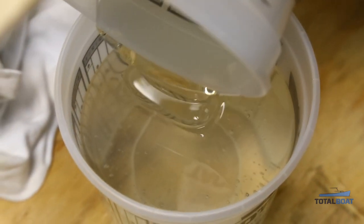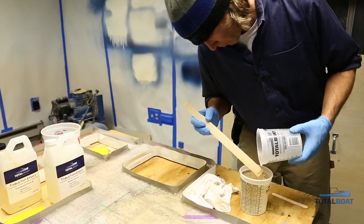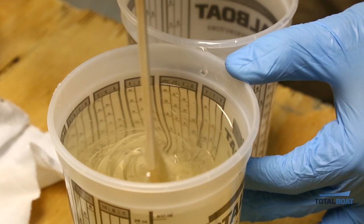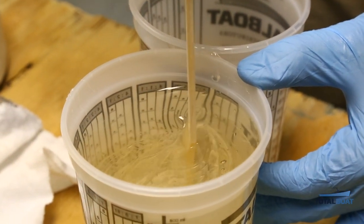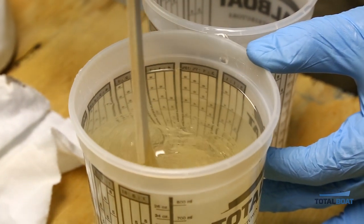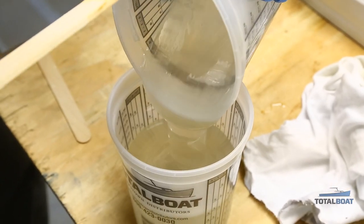As you mix part A and part B together, take your time. Mix it nice and slowly—you don't want bubbles in it. What we did was pour from one cup, stirred it really hard, and then poured all the contents back into the first cup and stirred it again, taking our time so we didn't get a lot of bubbles.